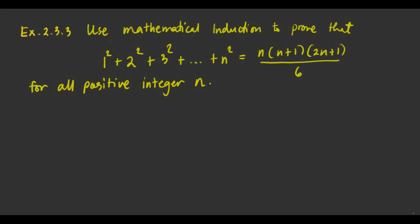We're going to use mathematical induction to prove that 1 squared plus 2 squared plus 3 squared plus up to n squared is equivalent to n times (n plus 1) times (2n plus 1) over 6, for all positive integers n. We'll use mathematical induction to make it clear, and let's write the proof right away.